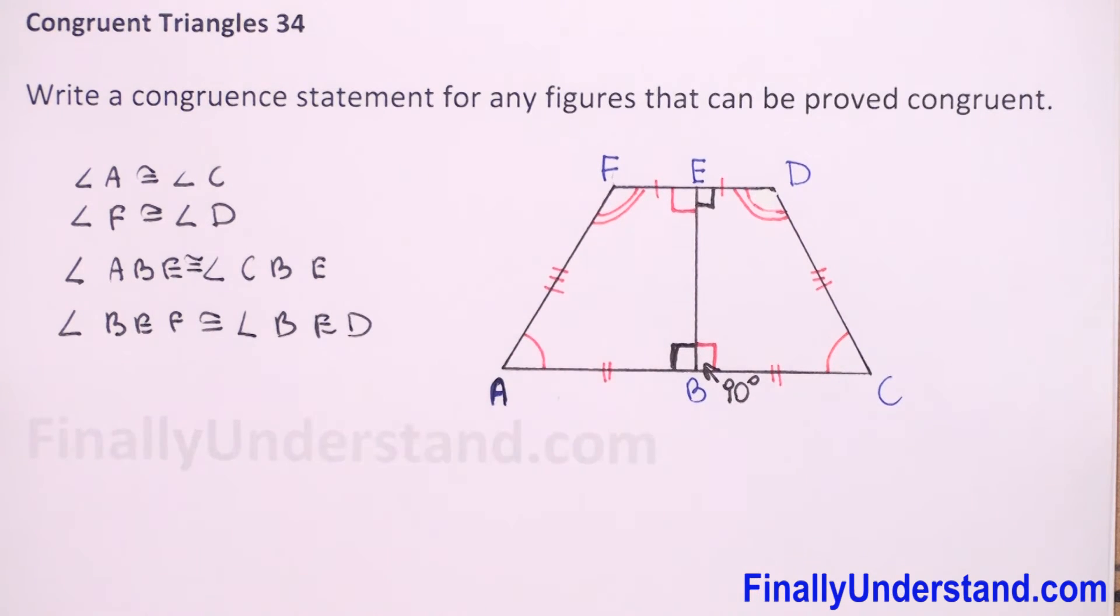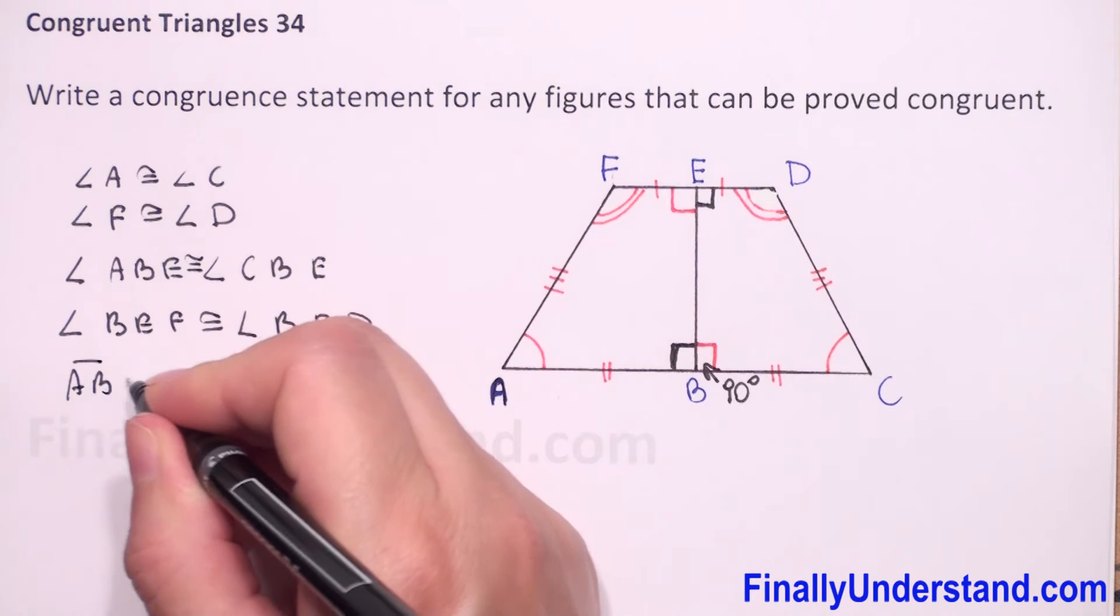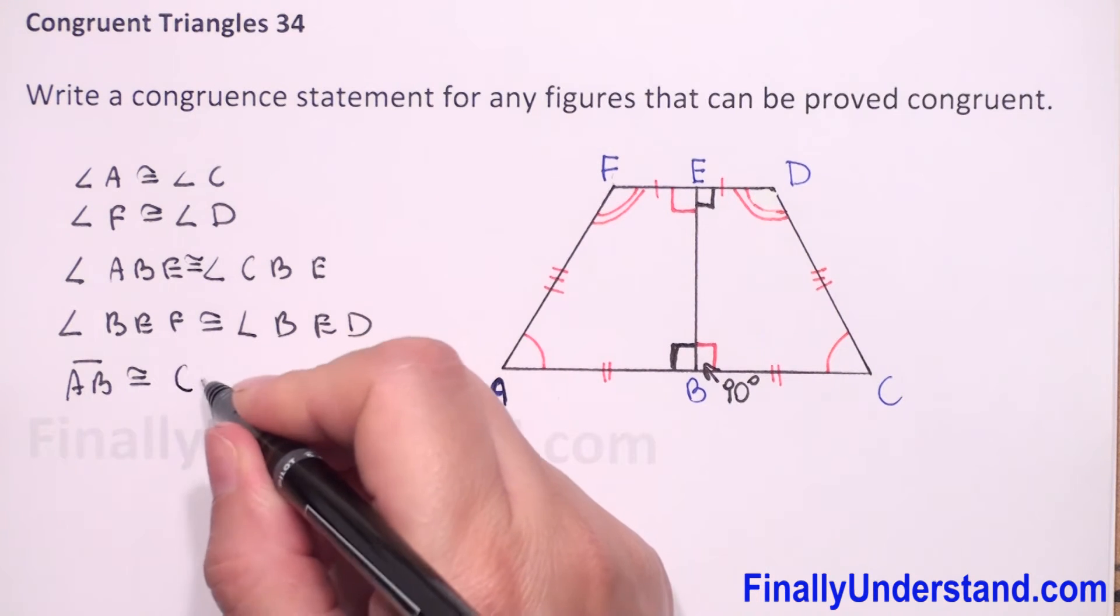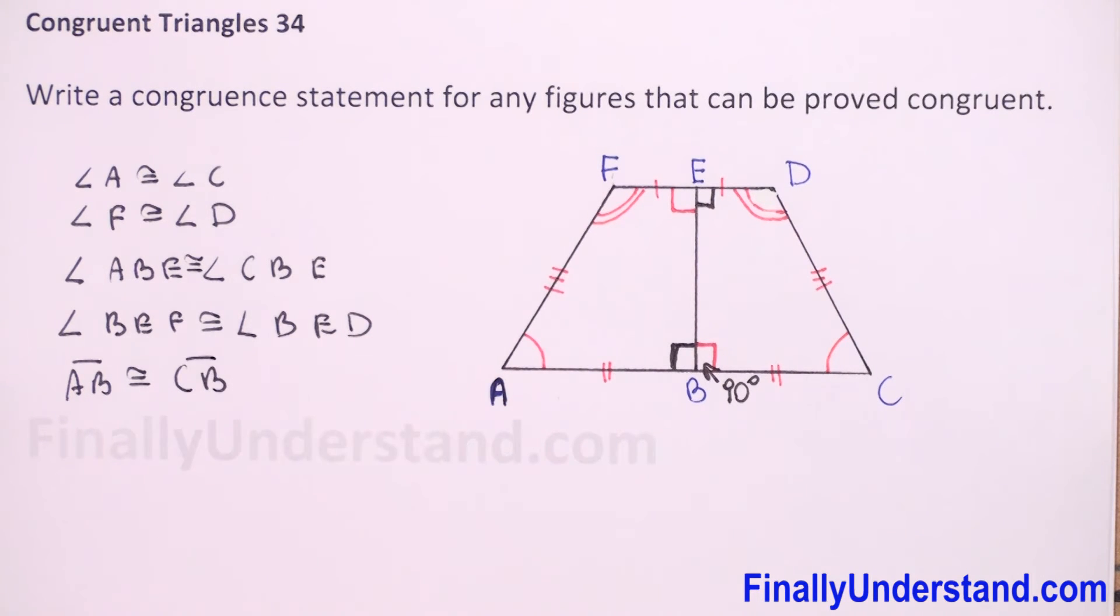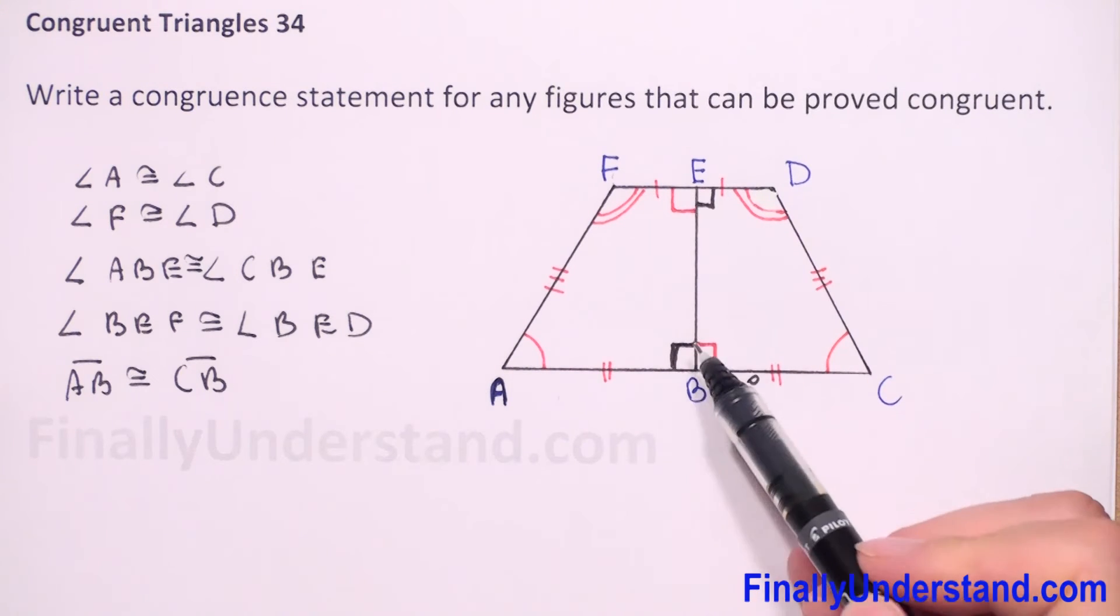What else? The side AB is congruent to CB. Next, BE is congruent to BE.